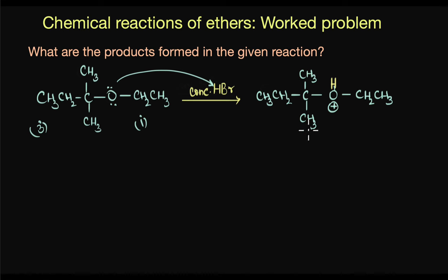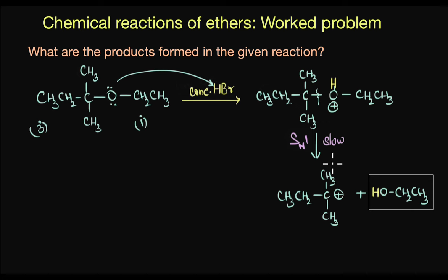Because if this bond breaks, the C-O bond breaks, it gives us a more stable tertiary carbocation. So the next step is the formation of the carbocation which is a slow step. And in this step you can see that the alcohol gets eliminated. So here we have ethanol forming.